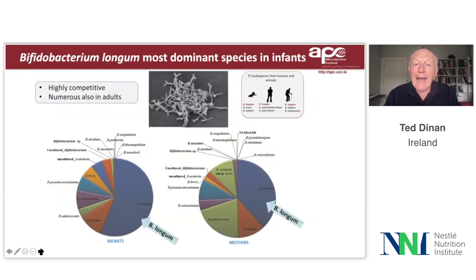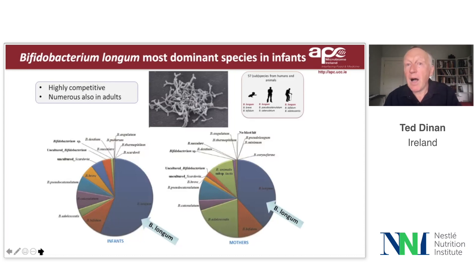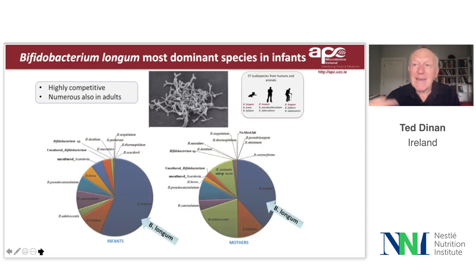When we look at an infant, the dominant species is undoubtedly Bifidobacteria longum. Levels of Bifidobacteria longum increase during pregnancy in the mum, and the levels in the infant are incredibly high. We've known for a long time that Bifidobacteria longum is very much associated with health — it's a very good bacteria with many physiological functions within the infant and child, and is generally regarded as a good marker for health.